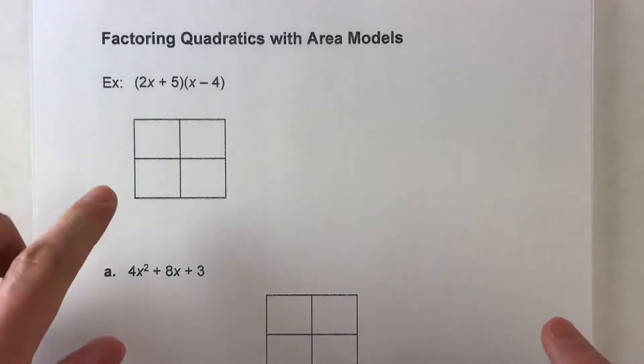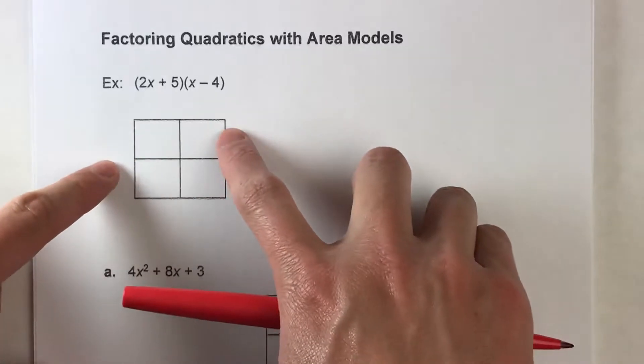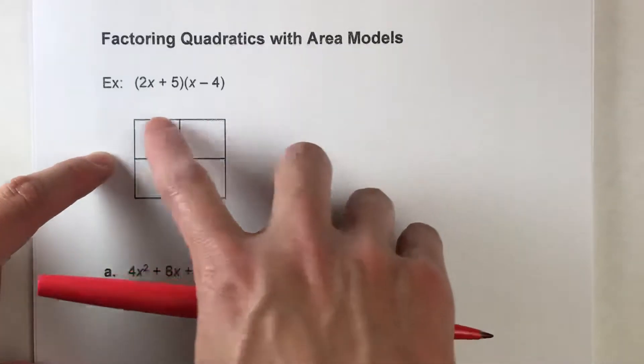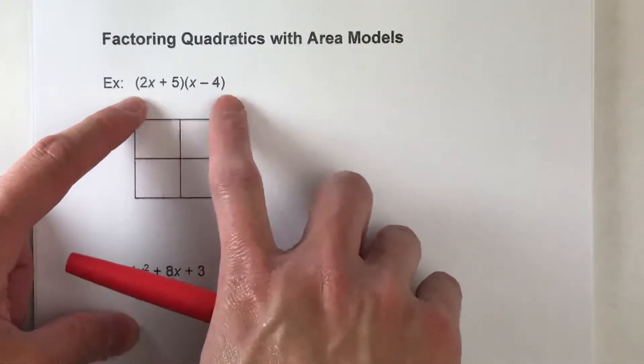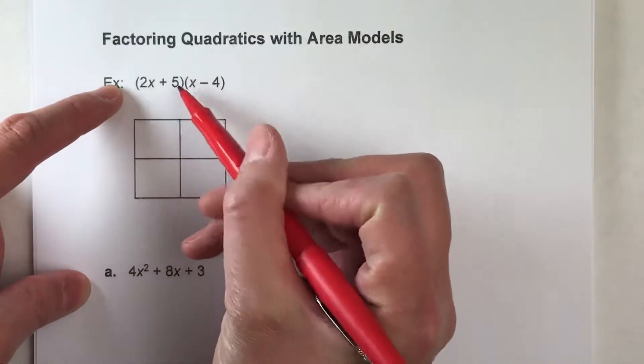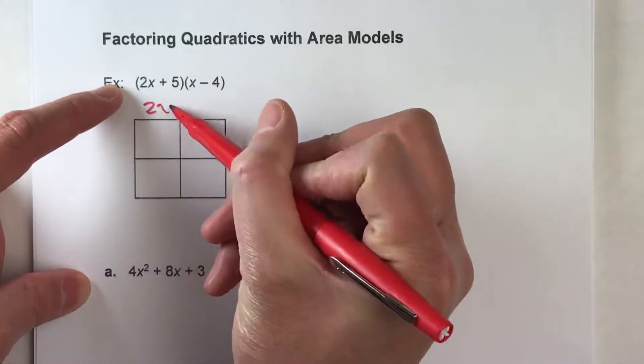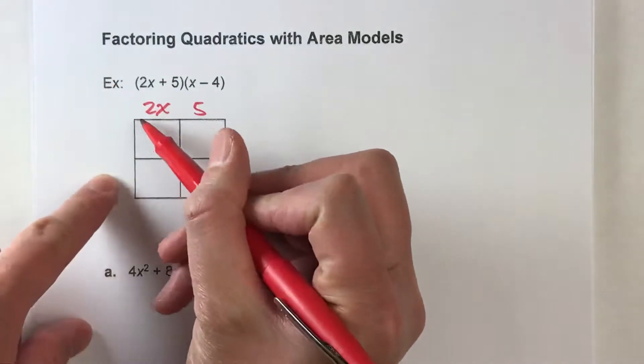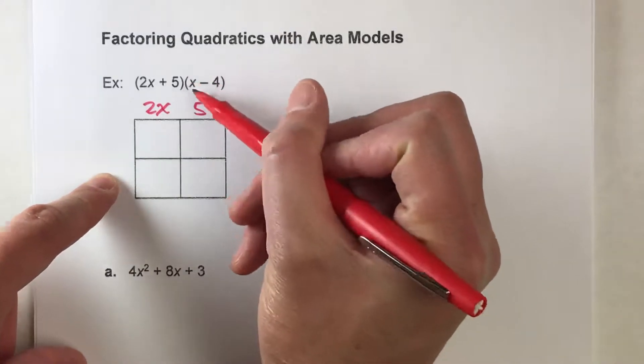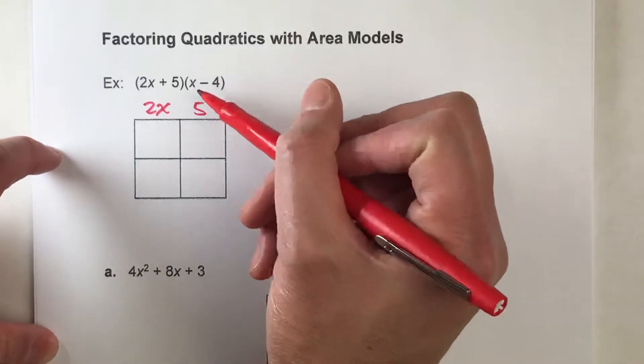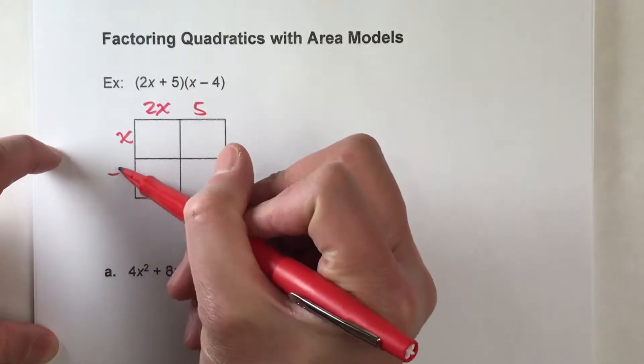And the way the area model works is we think of the area of a rectangle as length times width. And that's what factored form has. It has two things being multiplied together. So we treat one of the things, 2x plus 5, as the length. So this is 2x plus another 5. And the width is the other thing in parentheses. So this is x minus 4.